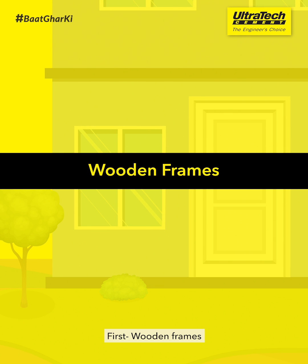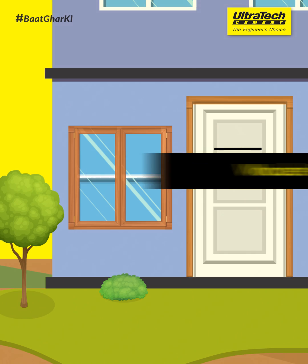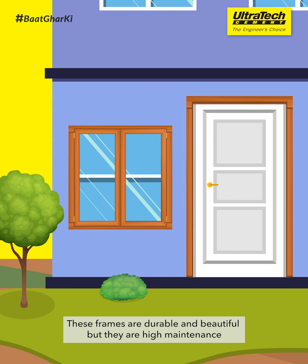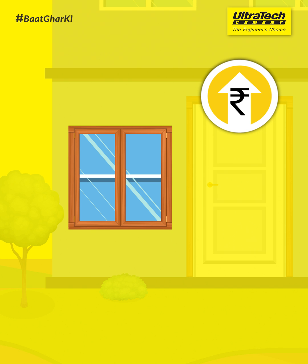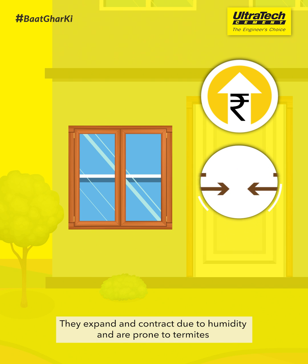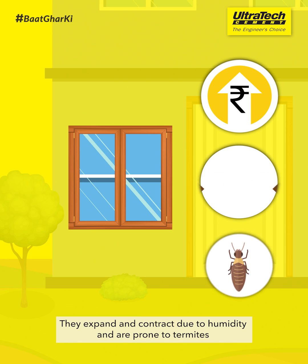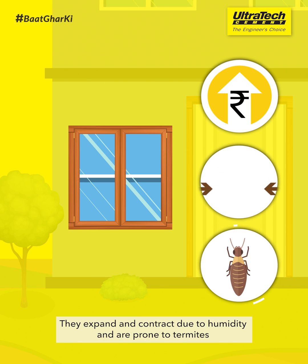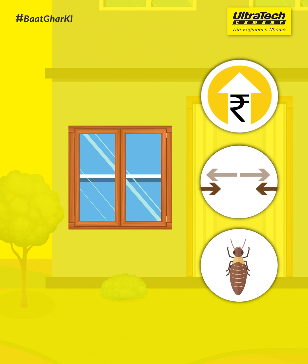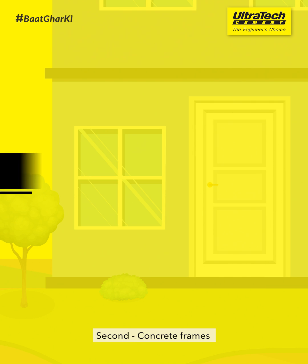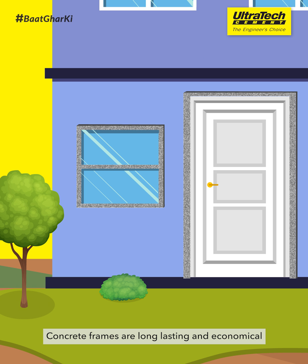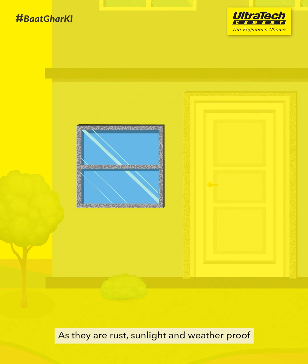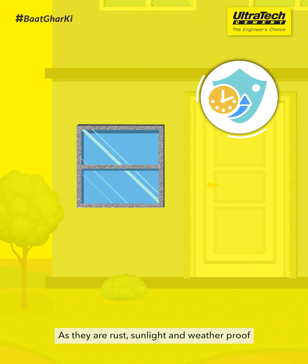First, wooden frames. These frames are durable and beautiful, but they are high maintenance. They expand and contract due to humidity and are prone to termites. Second, concrete frames. Concrete frames are long-lasting and economical, as they are rust, sunlight, and weatherproof. They require less binding mix for fixing.